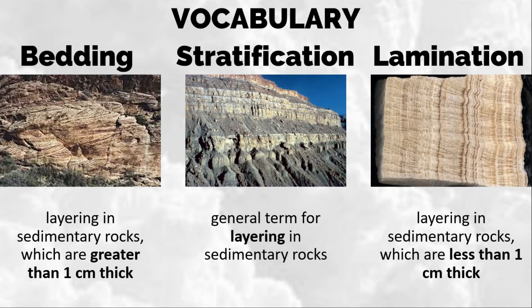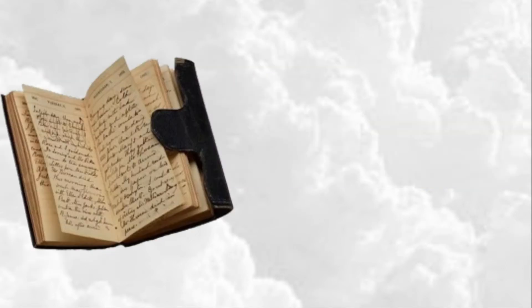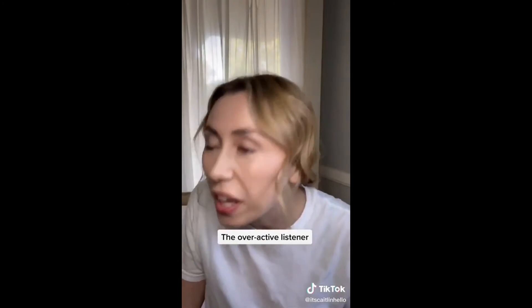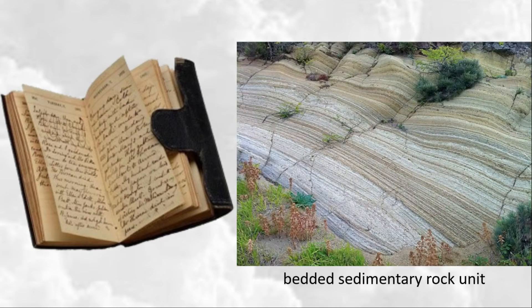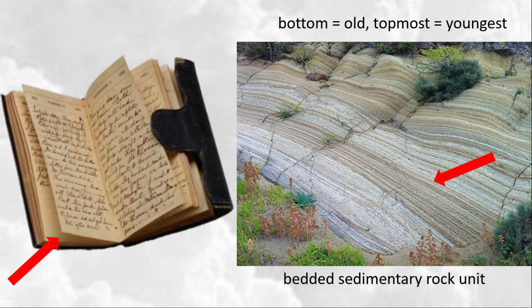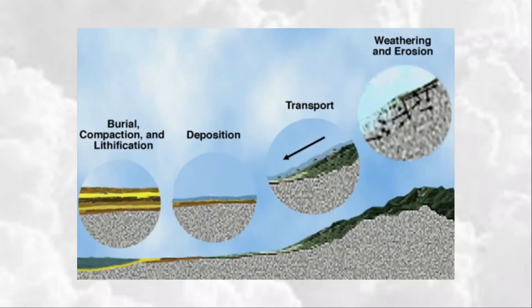So bedding is greater than one centimeter, lamination is less than one centimeter. To understand this, think of a diary — you write the date and the important things that happen on that day, so you can go back to those memories. It's the same with layers of rocks. The succession of layers or beds in a sedimentary sequence represents successive time intervals in Earth's history, with the bottom being the oldest and the topmost representing the youngest.